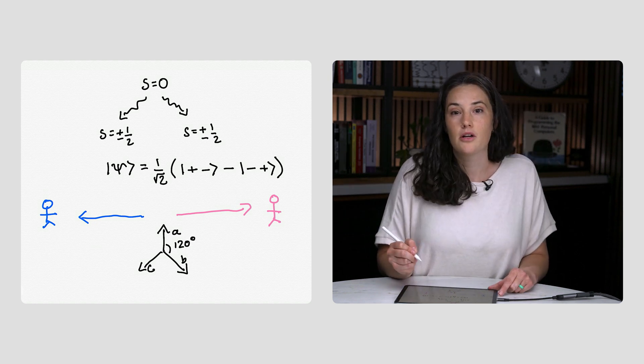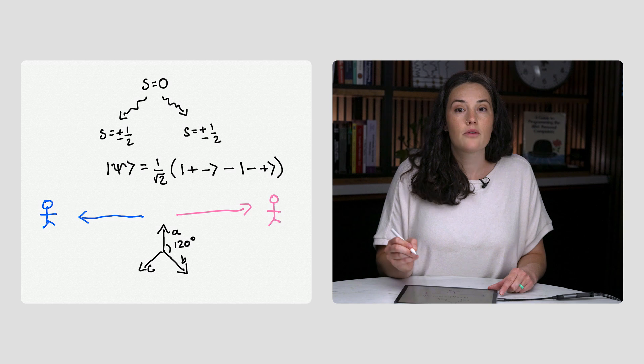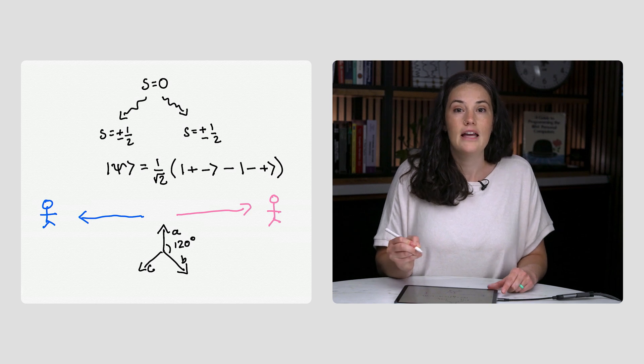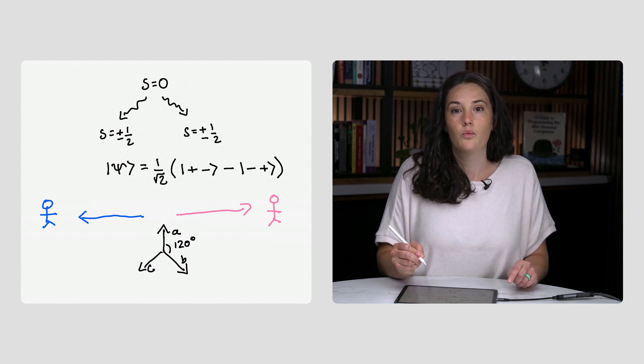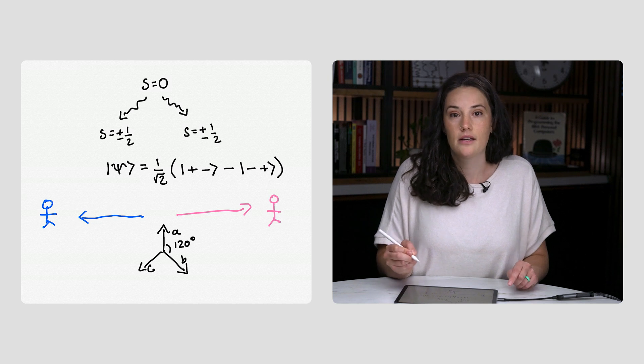The question we will ask with this experiment is, if Lucas and Rihanna are free to measure along any of the three axes, how often will the two obtain the same sign? Clearly,